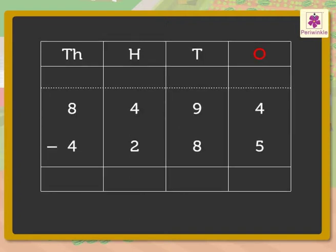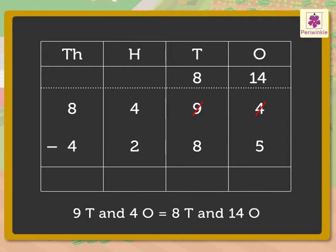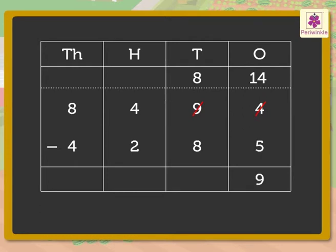Subtract the ones. That is, four minus five. As the ones are not enough, we regroup the tens. That is, nine tens and four ones is equal to eight tens and fourteen ones. Therefore, fourteen minus five is equal to nine ones. Now, subtract the tens. That is, eight minus eight is equal to zero.